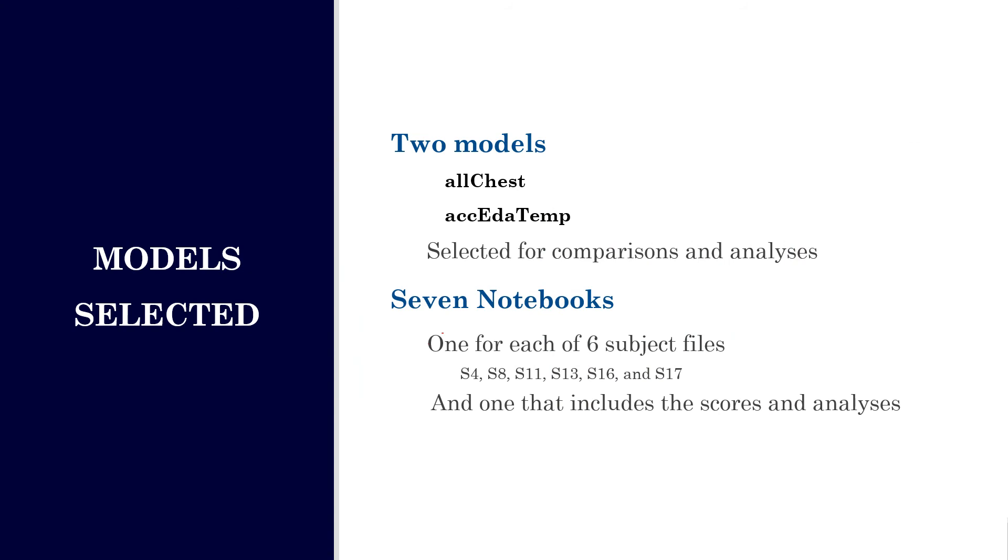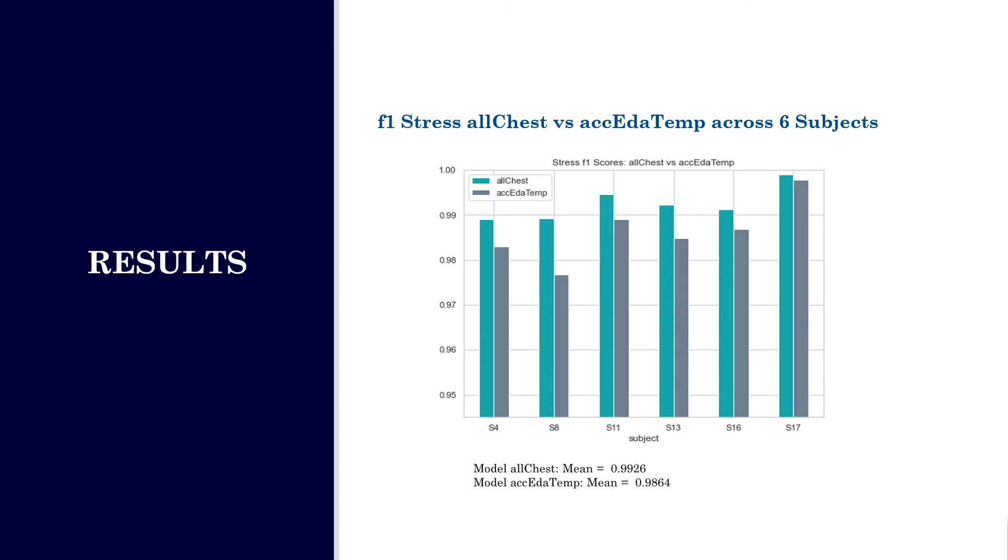Two models chosen for comparisons and analyses were the all-chest model, which included all the chest features, and the model ACC EDA TEMP, which included features from the chest that aligned with accelerometer, epidermal activity, and skin temperature wrist sensors. Here we can see the plot and the mean for both all-chest and the ACC EDA TEMP models. Across six subjects, it would be S4, 8, 11, 13, 16, and 17. The mean for both were pretty close together, 99.26 percent and 98.64 percent for the ACC EDA TEMP.